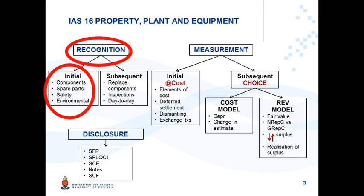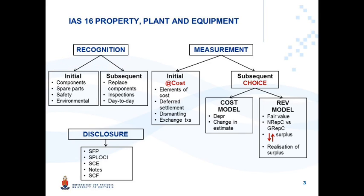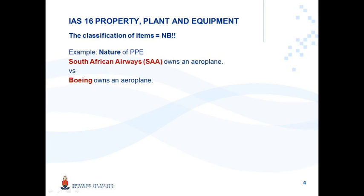The first aspect we have to focus on is the classification of items. Why is the classification of an item so important? It has a direct influence on the accounting treatment of that item. Let's look at an example.